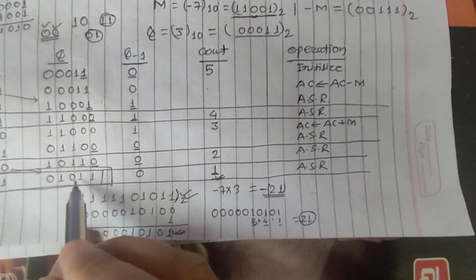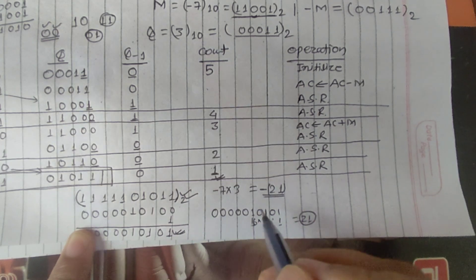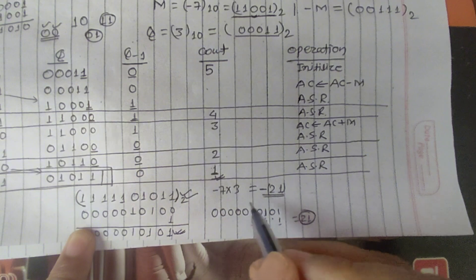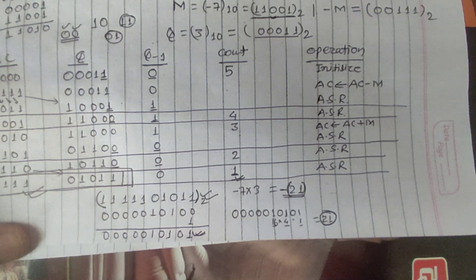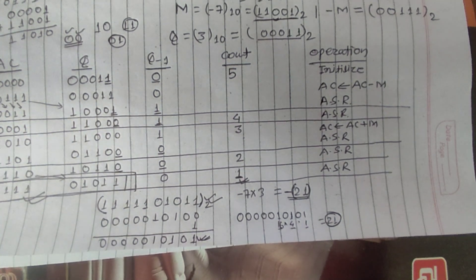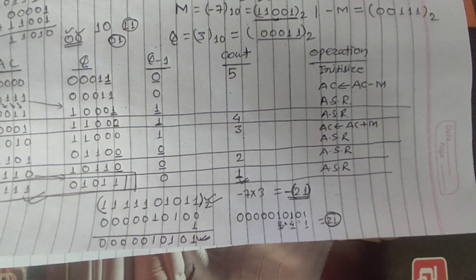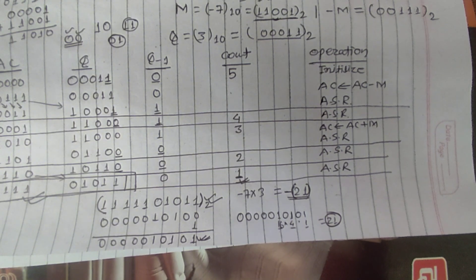So in this way we can perform multiplication using Booth's algorithm where one number is negative and another is positive. That's all for the second part. In the third part, we will discuss how to perform multiplication when both the multiplicand and multiplier are negative. Thank you for watching.